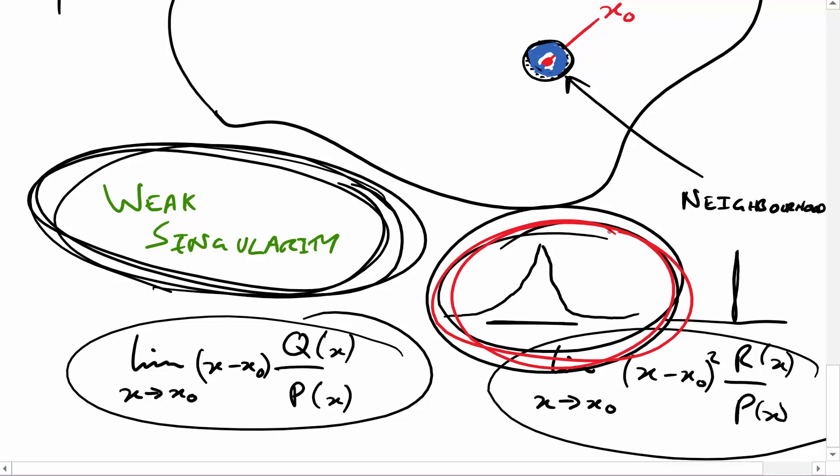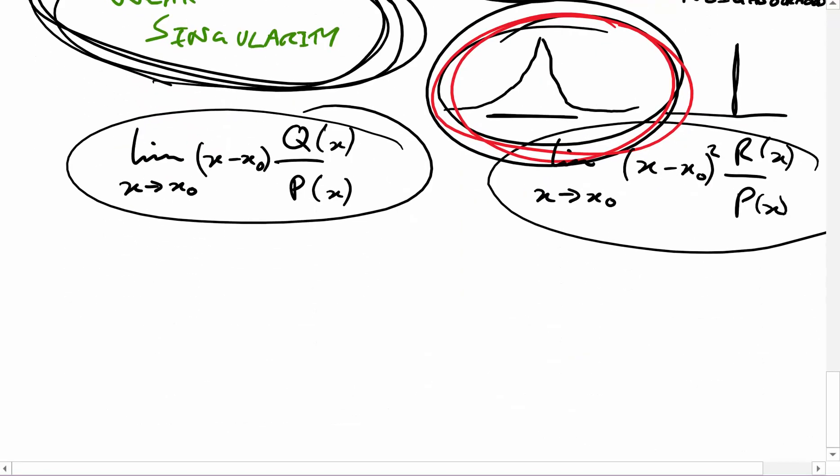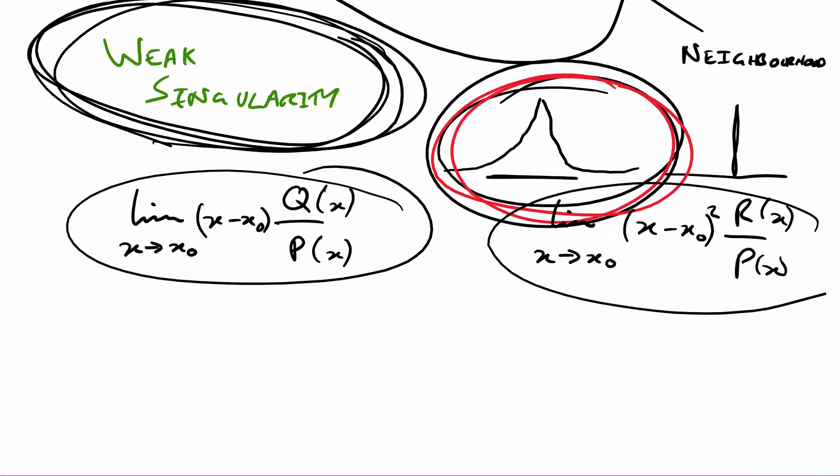So that's the idea of a weak singularity. The way we're going to introduce solving around these points is by introducing the Euler equation. We've met the Euler equation before, but we're going to look at it in far more detail — introducing all the ins and outs — because the Euler equation actually behaves like most singular points. If we can understand how the Euler equation works, we can say a lot about how solutions behave at singular points. That's what we'll be doing in the next video.